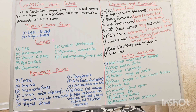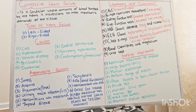Now let's talk about causes of congestive heart failure: CAD, hypertension, valvular disease, pericarditis, dysrhythmias, cardiac tamponade, pulmonary hypertension, and cardiomyopathy — which is an irreversible disease; once the damage is done, it cannot be reversed.